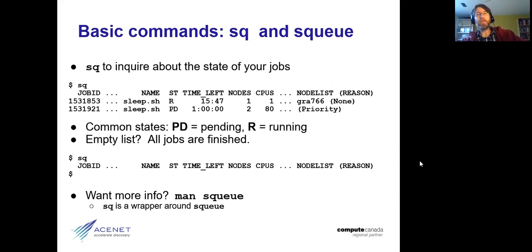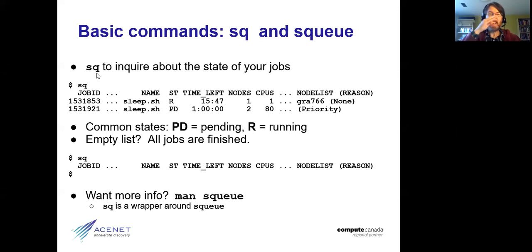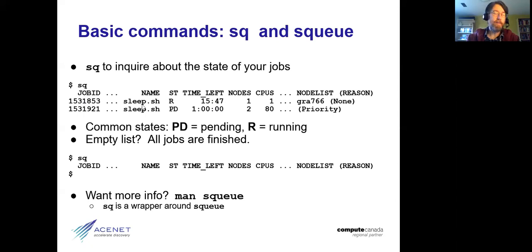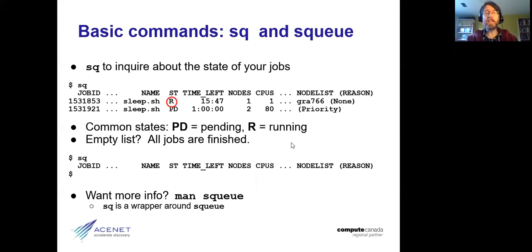Once you've submitted a job with sbatch, you may be curious what state it's in — is it finished, running, or still waiting? The command you want is sq — the letters S-Q. When you run sq, it gives a wide output including the job ID number, the job name (typically the name of the script file you submitted), the amount of time the scheduler thinks is left for the job, how many nodes and CPUs it's using, and what node it's running on. You're mostly interested in the ST column, which stands for state. It will show R if it's running — that's what you really like to see.